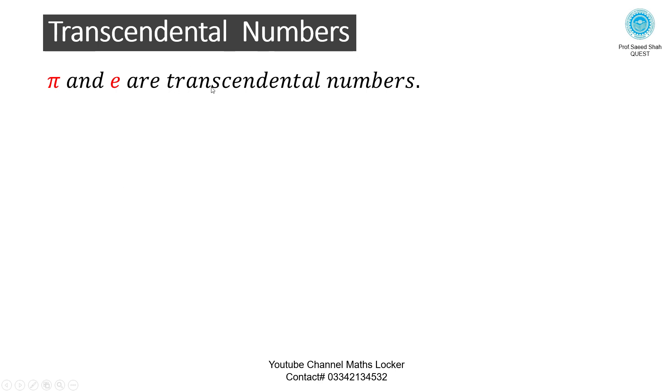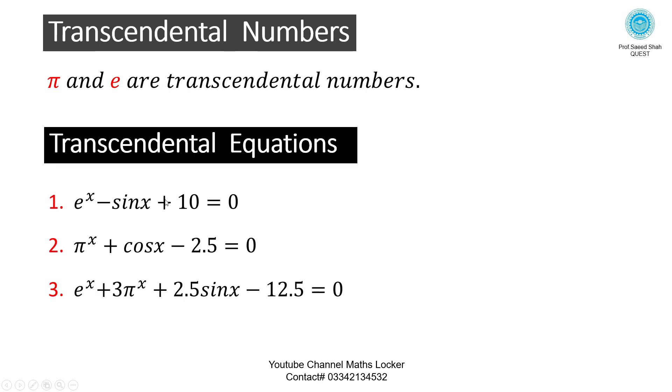Transcendental Numbers: π and e are transcendental numbers. Transcendental Equations: 1. eˣ - sin x + 10 = 0. 2. πˣ + cos x - 2.5 = 0. 3. eˣ + 3πˣ + 2.5 sin x - 12.5 = 0. These are called Transcendental Equations which are written in exponential or π form.